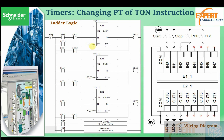What has happened is that we have now defined a variable called PT, and this variable is the one we are going to be changing dynamically. We have added one new block: when push button one becomes pushed, this contact closes, the block operates, and it assigns the time of four seconds to the PT so all timers become four seconds.